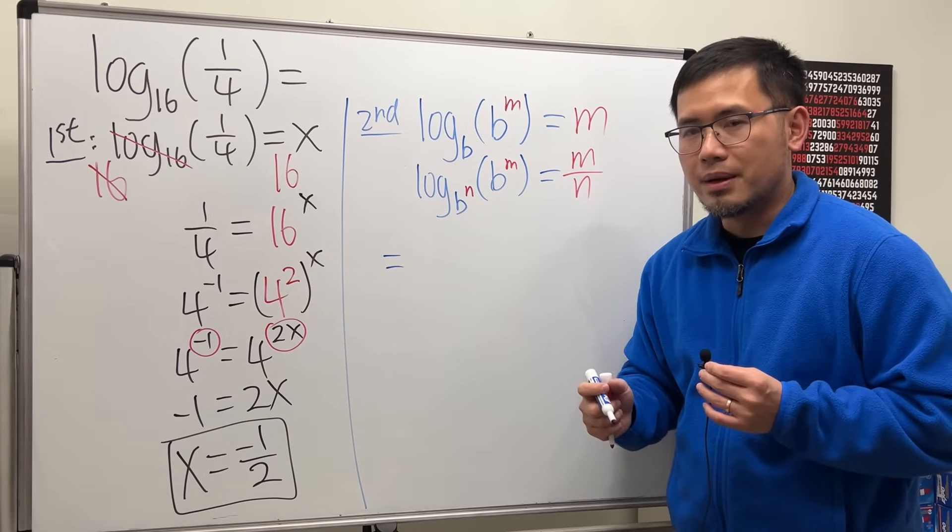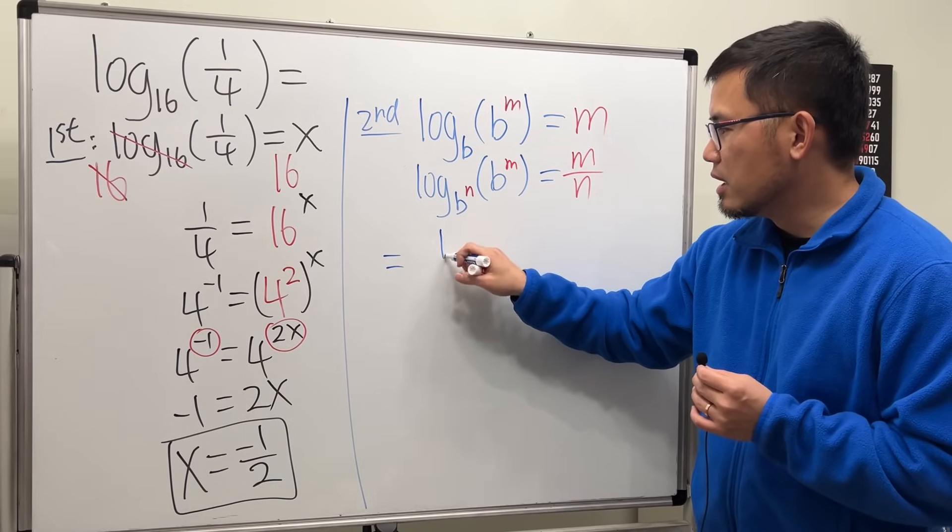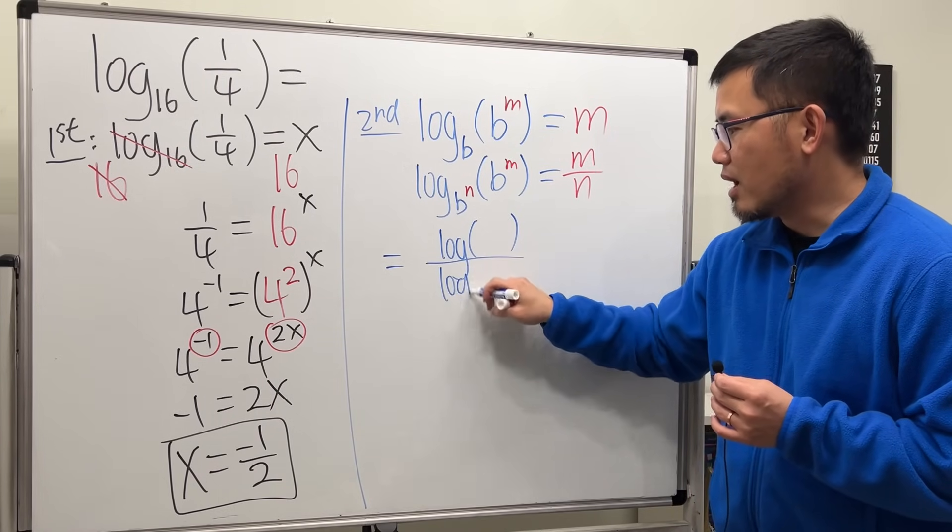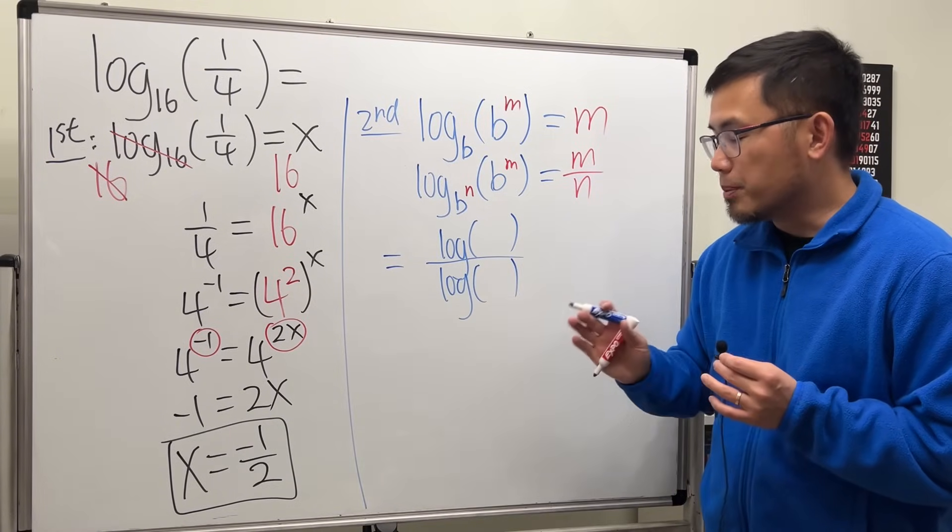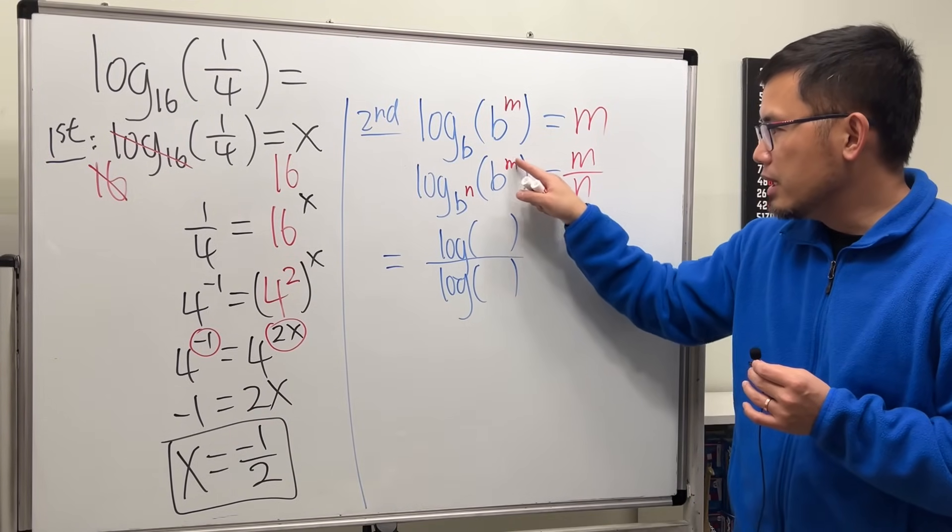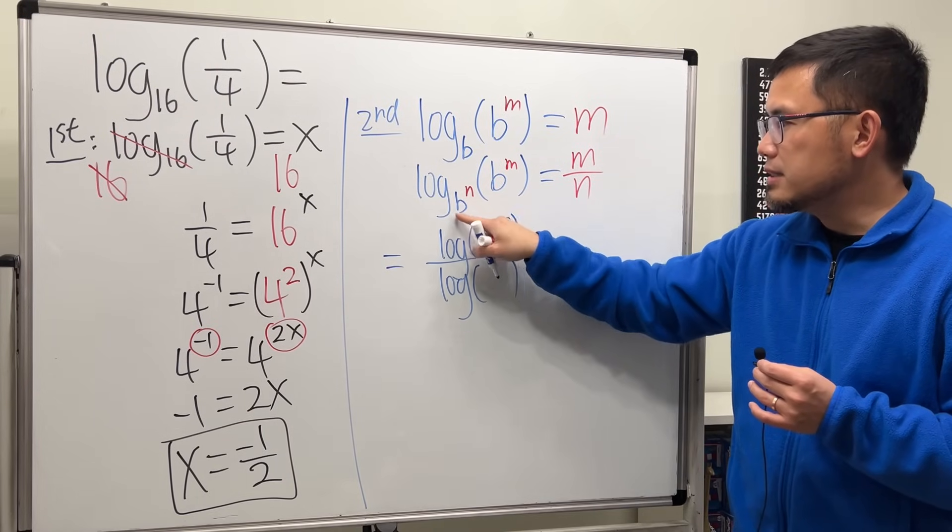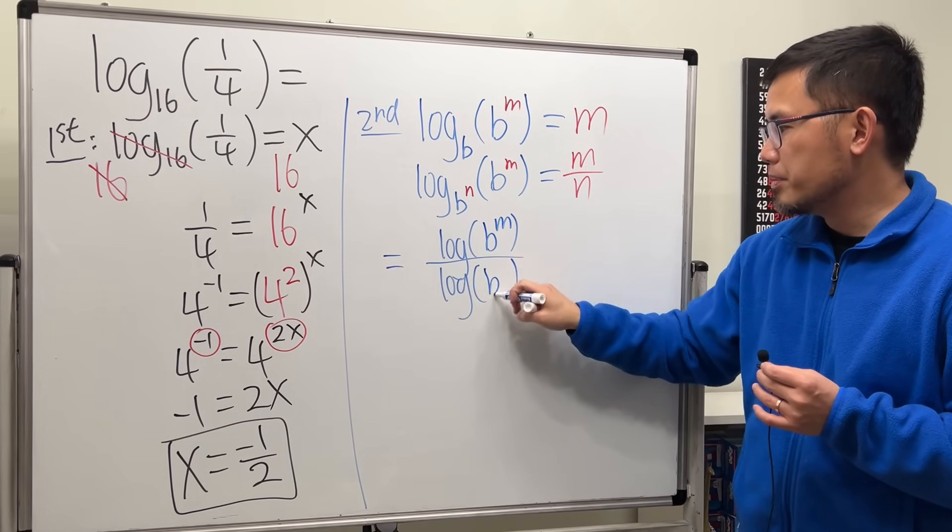That we have a base right here, right? So you can use the change of base formula. I'm just going to take the regular log. Log divided by regular log. And the change of base formula says you can put the inside here on the top right here, so that's b to the n, and then this base goes on the bottom here, b to the n.